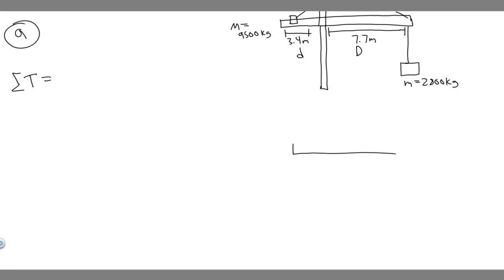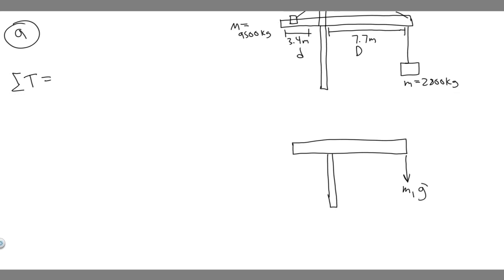Imagine this is our beam. What forces are acting on it? We have a force m1·g going down on one side from the first mass. And then over here, we have another mass causing another force — m2·g. Since the whole beam is massless, those are the only two forces we need to worry about. These are going to be the two forces acting on it, along with these distances.